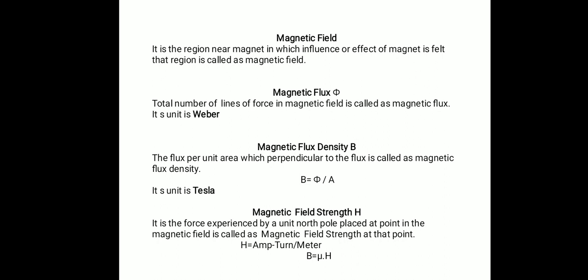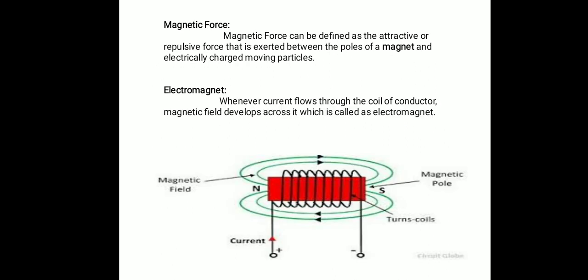Magnetic field is the region near a magnet in which the influence or effect of the magnet is felt, and that region is called the magnetic field. Magnetic field is just a region near the magnet in which influence or magnetic flux lines are present. Magnetic field is not the same as magnetic flux or magnetic force — it is simply the region near the magnet in which the influence of that magnet is felt.